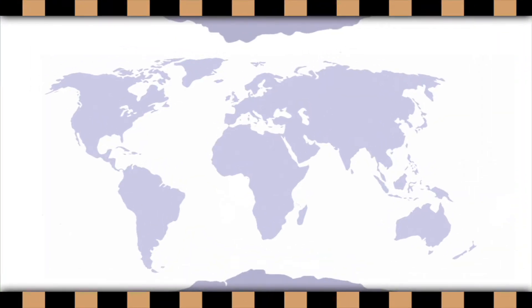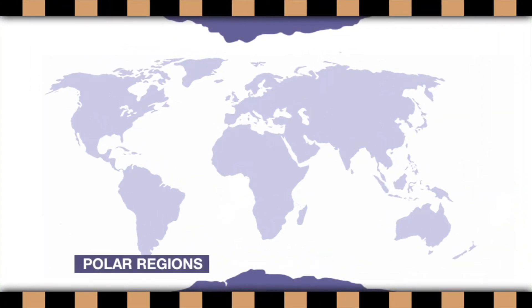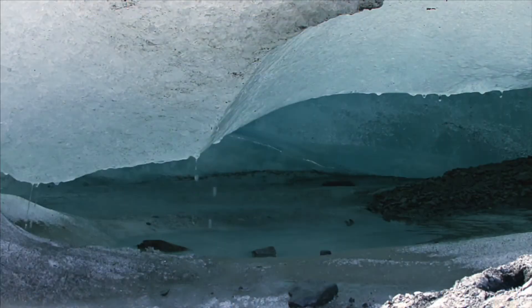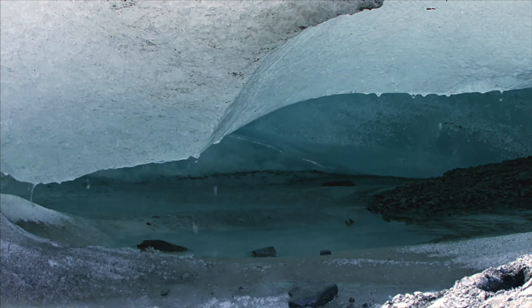Most continental glaciers are found in the polar regions of Earth, at the North and South Poles. Glaciers are the largest source of fresh water on Earth.